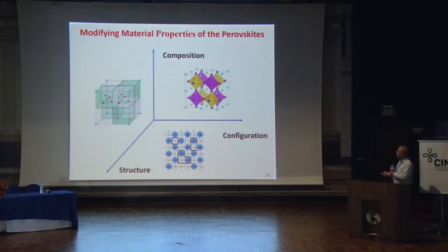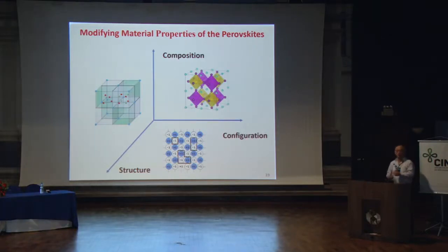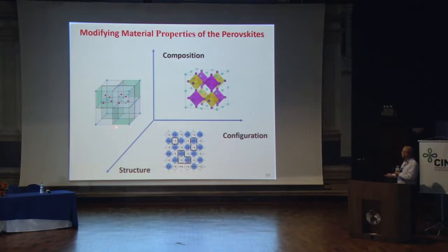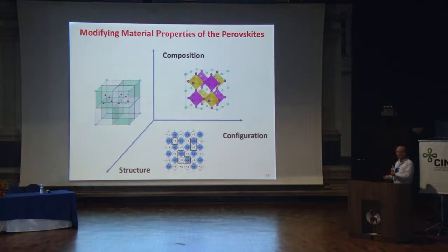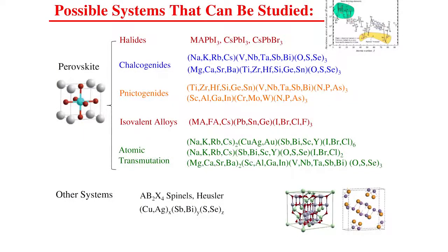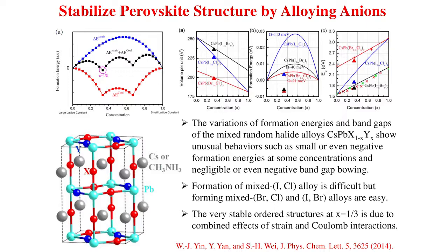However, since most good properties come from lead, and lead is poisonous, you want to replace it for environmental safety. Also, because the bonds are weak, the material is not very stable — it can start to dissolve into binary compounds within a few hours. There are many studies trying to design new materials that are more stable while keeping good electronic properties. To modify material properties, you can change composition, change the structure with the same composition, or change the arrangement of elements within the lattice.